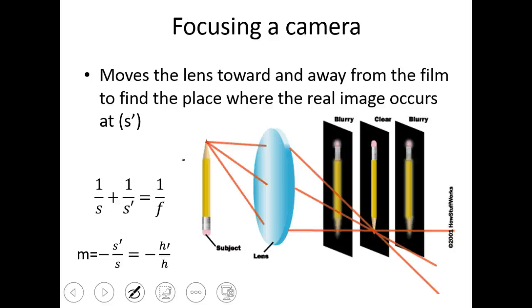As we focus the camera, we move the lens towards and away from the film to find a place where S prime is nice and focused. For this, we still use the thin lens equation, and we still use the magnification equation. And so S prime is just the location on the film, how far that is from the lens. So this is S prime, where that is focused, and then S is still the distance from the subject to the lens. Focal length depends on the camera, on the lens that you're using.